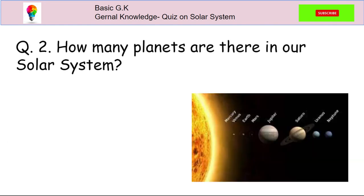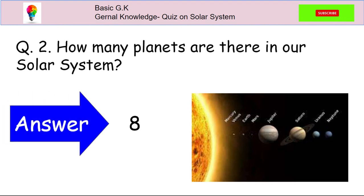Question 2. How many planets are there in our solar system? The answer is 8.